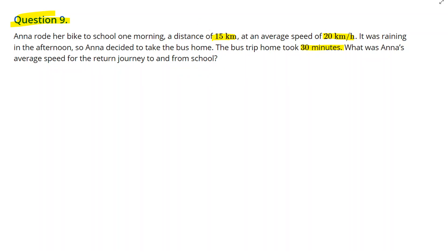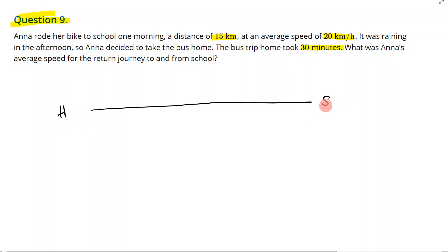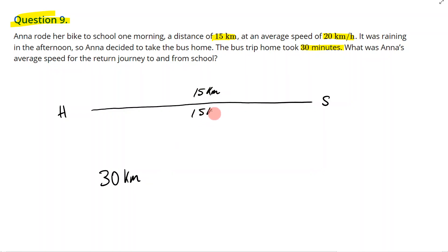Let's picture what's happening. We've got this journey from home to school. We know that it's 15 kilometers to school and 15 kilometers back home, so in total she's traveling 30 kilometers — 15 kilometers to school, then 15 kilometers back home. We also know that the bus ride home took 30 minutes.